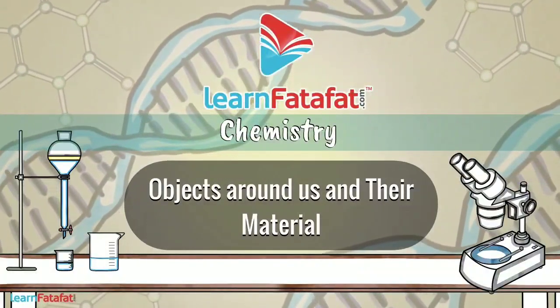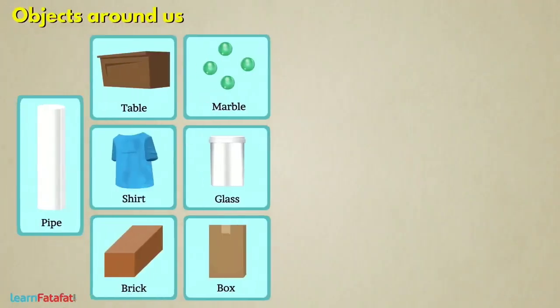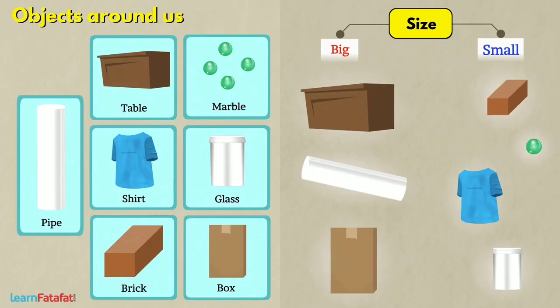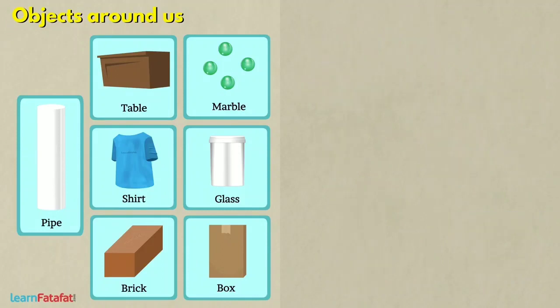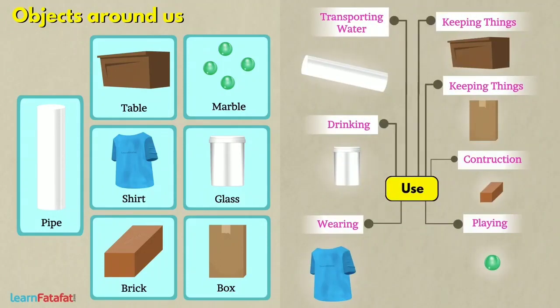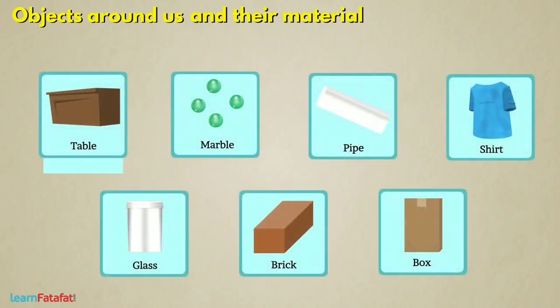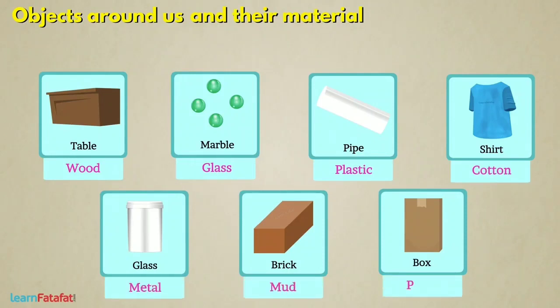Objects around us and their material: there are various objects around us and they can be grouped in different ways based on properties such as size, shape, color, or their use. There is one more property with which we can classify objects — it is based on the material from which the object is formed. A material is a thing such as wood, glass, plastic, cotton, metals, mud, or paper from which an object can be formed.